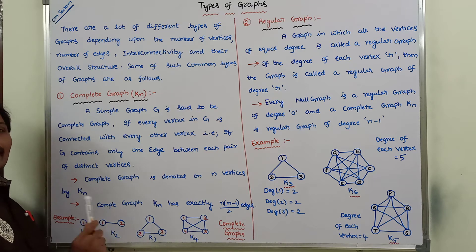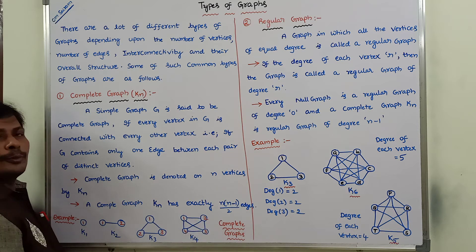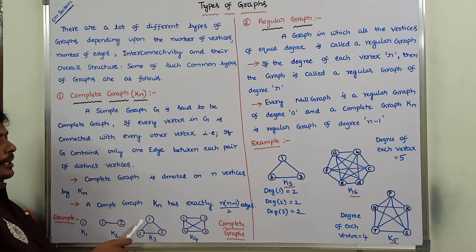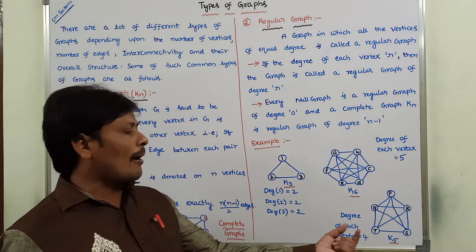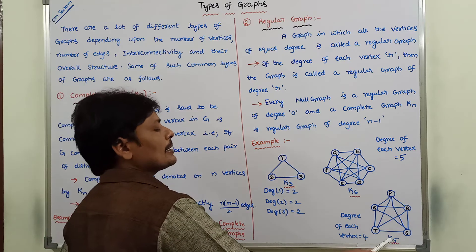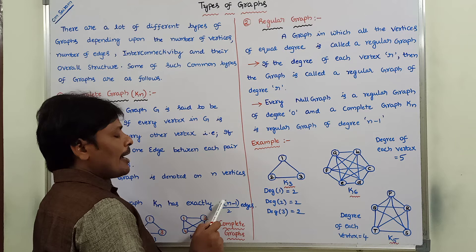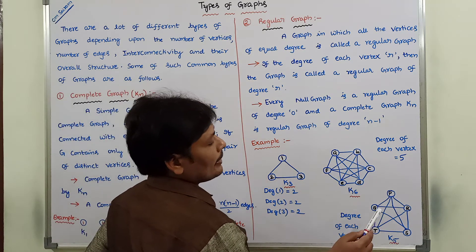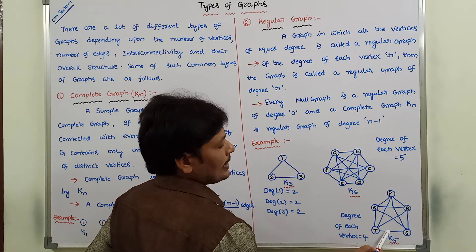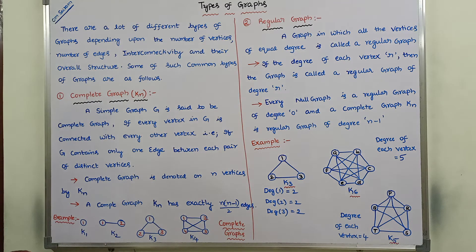In K3, n equals 3, so 3×2/2 equals 3 edges — 1, 2, 3 edges are there. In K5, n equals 5, so 5×4/2 equals 10 edges — counting 1 through 10, there are 10 edges.